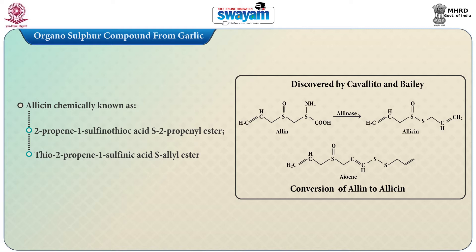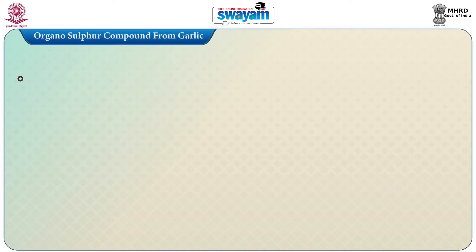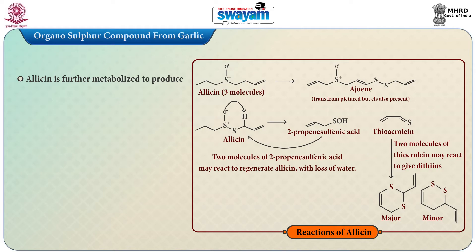Allicin does not exist in garlic until it is crushed or cut. Injury to the garlic bulb activates the enzyme alliinase, which metabolizes alliin to allicin.